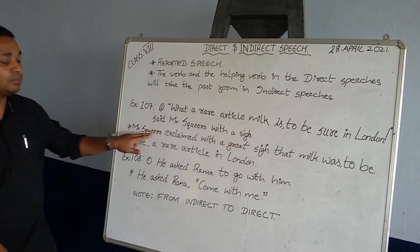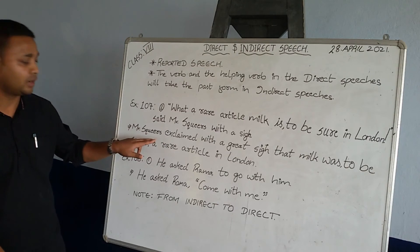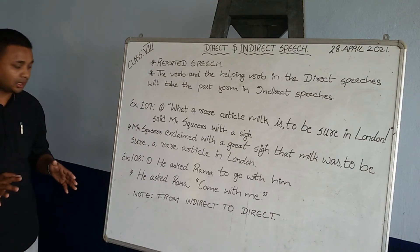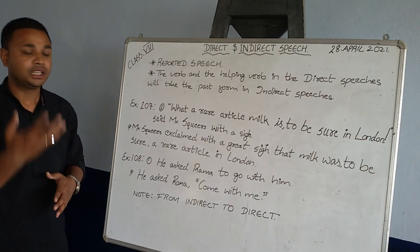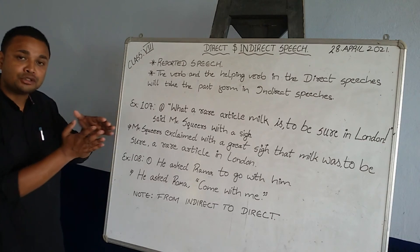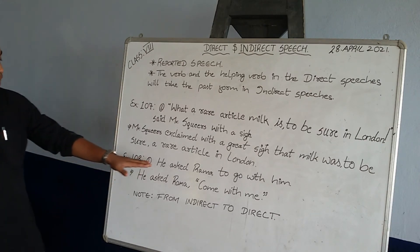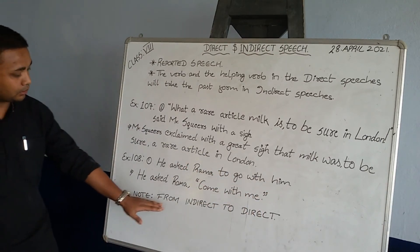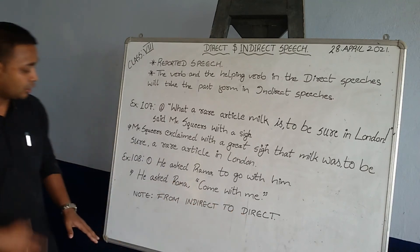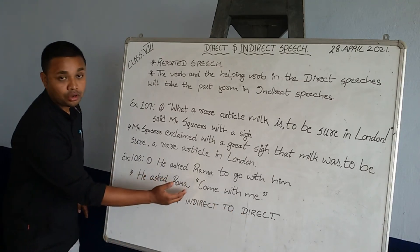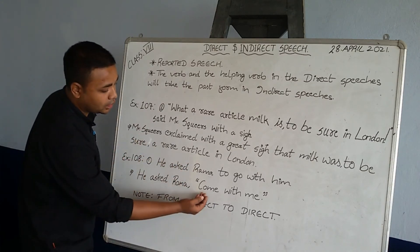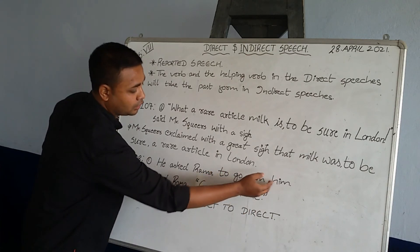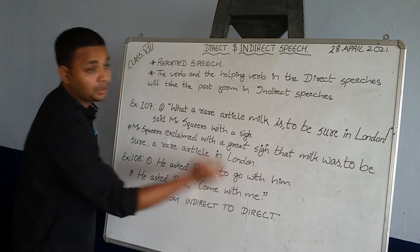Now Exercise 108 — here there is a slight change. The questions are given in the indirect form and you have to convert them into direct speech. Question 1: 'He asked Ram to go with him.' This is indirect. The answer in direct speech will be: He asked Ram, 'Come with me.' Notice: 'go' becomes 'come,' and 'him' becomes 'me.'